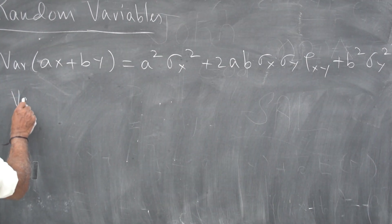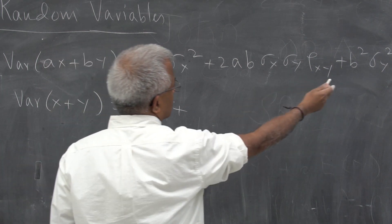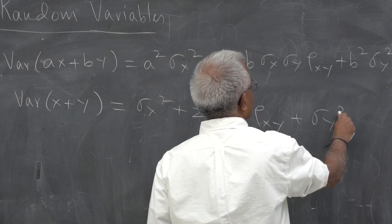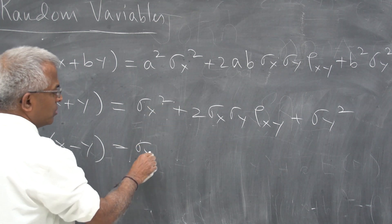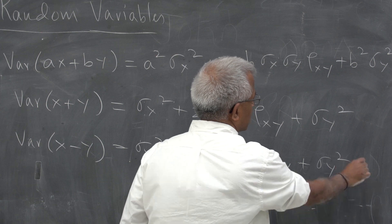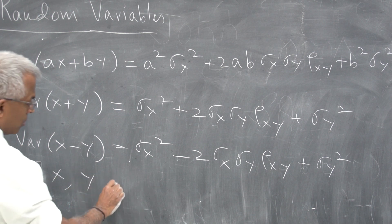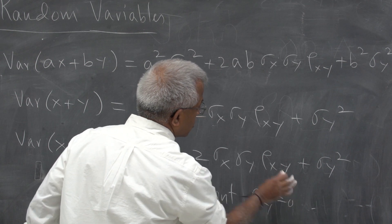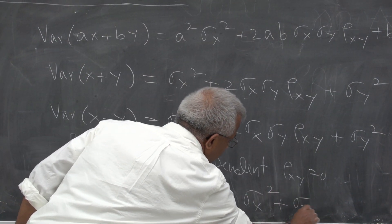A special case is the variance of x plus y, where a and b are both 1. This gives σx² plus 2σx·σy·ρxy plus σy². For the variance of x minus y, set b equal to minus 1, giving σx² minus 2σx·σy·ρxy plus σy². If x and y are independent, then ρxy is zero, so the middle term vanishes. Both the variance of x plus y and x minus y become simply the sum of the variances.